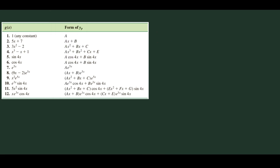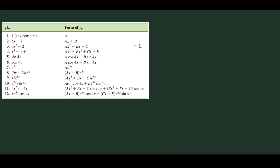For the third one, we have 3x squared minus 2, which is a quadratic function. The general form of a quadratic function is ax squared plus bx plus c, which we know well from college algebra.